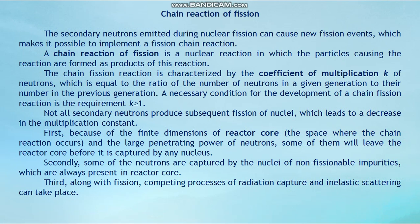A necessary condition for the development of chain fission reaction is the requirement k ≥ 1. Not all secondary neutrons produce subsequent fission of nuclei, which leads to a decrease in the multiplication constant. First, because of the finite dimensions of the reactor core — the space where the chain reaction occurs — and the large penetrating power of neutrons, some of them will leave the reactor core before being captured by any nucleus. Secondly, some of the neutrons are captured by the nuclei of non-fissionable impurities, which are always present in the reactor core.